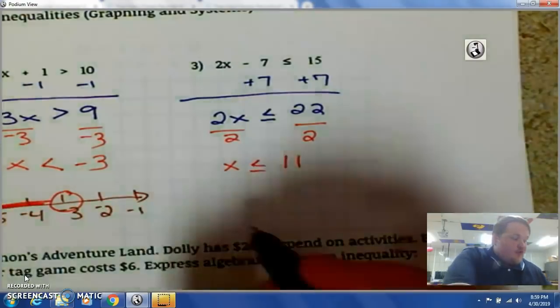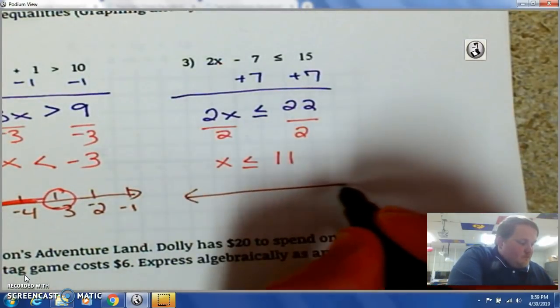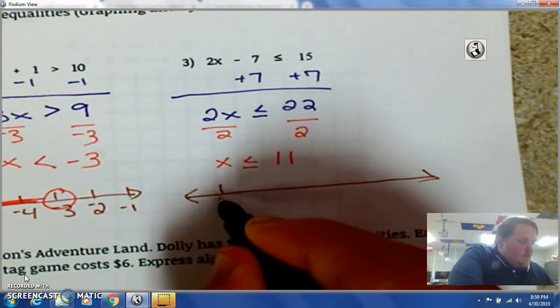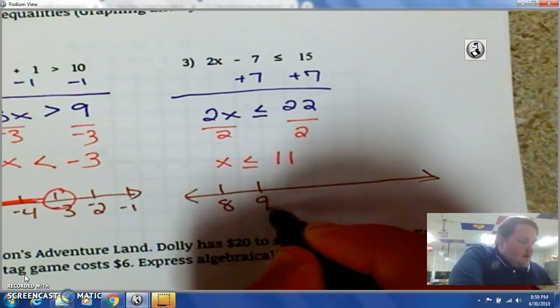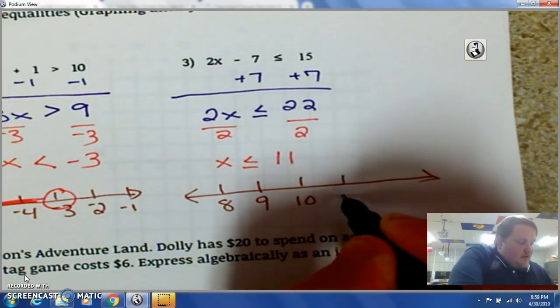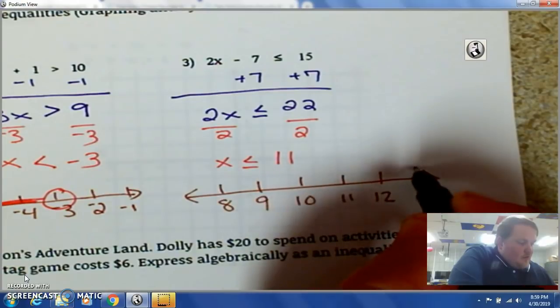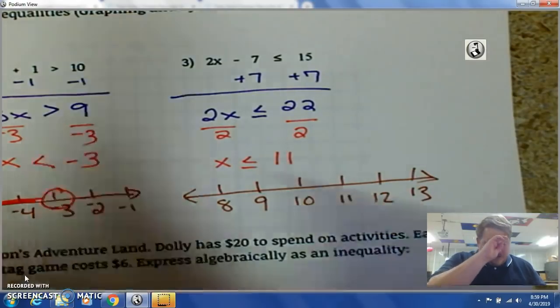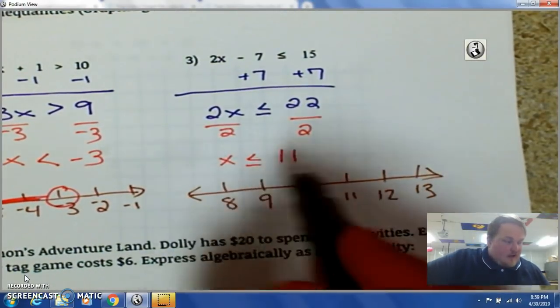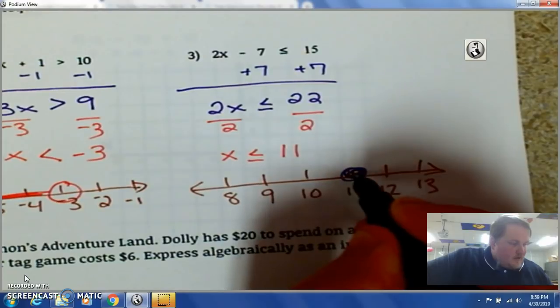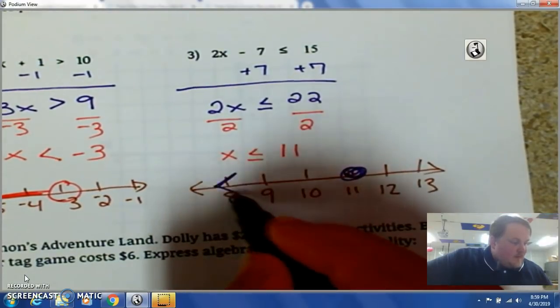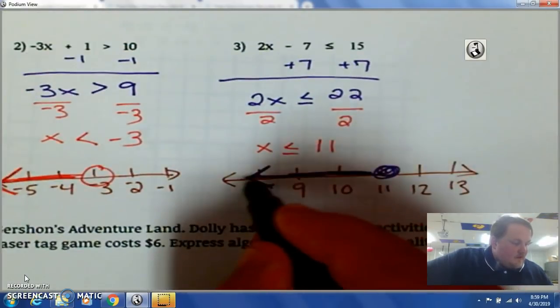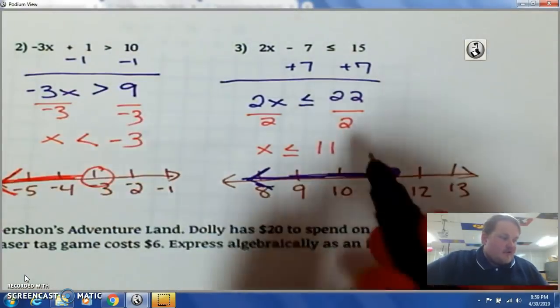And now I'm going to draw my line. 8, 9, 10, 11, 12, 13. I'm going to draw on a random number line. It's a closed circle because there's a line underneath at 11. And it's less than. So, all the numbers less than 11. I'm going to draw the arrow in that direction.